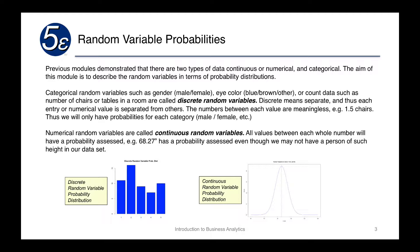Numerical random variables are called continuous random variables. All values between each whole number will have a probability assessed. So in our data set, we may collect various heights of students, and we could actually calculate the probability of having someone with a 68.27 inch height, even though we may not have had such a person of such height in our data set.